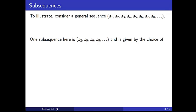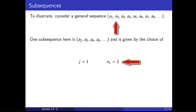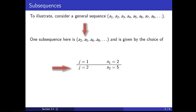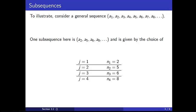To see how the notation works, this subsequence is given by the choices: j=1 and n_1=2 — notice that a_2 is in the first position of the subsequence and the second position of the original sequence. Next, j=2 and n_2=5, so a_5 is in the second position of the subsequence and the fifth position of the original. Then j=3 and n_3=6, since a_6 is in the third position of the subsequence and the sixth position of the original.